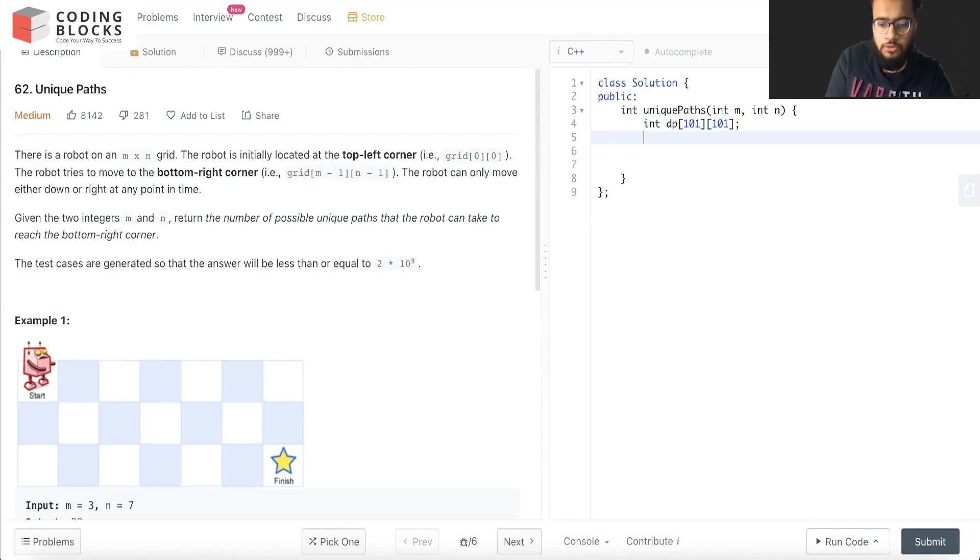Now we'll also define two variables i and j. j is equal to 0. Let's say now we'll first write the boundary cases. What will happen if i is greater than or equal to m, or j is greater than or equal to n? We'll just return 0.